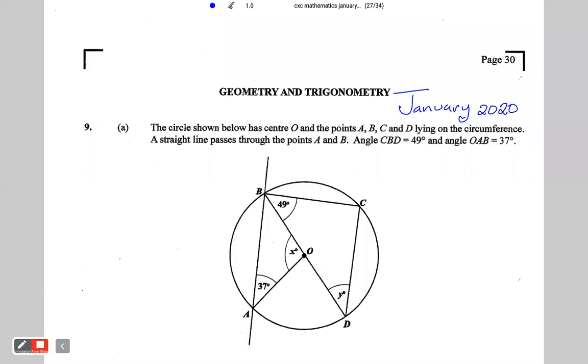Alright, guys. So this is January 2020, question number nine. It says the circle shown below has center O and the points A, B, C and D lie on the circumference. A straight line passes through the points A and B. Angle CBD is 49 degrees and angle OAB is 37 degrees.